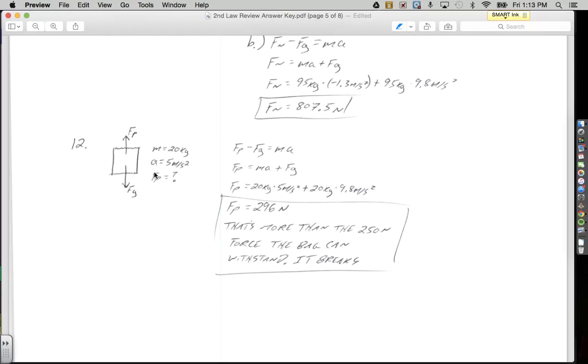And the reason for that is because we're actually saying, how hard do we have to pull to make it move 5 meters per second squared? If we pull with 250 newtons, it's not going to make it go 5 meters per second squared. It's either going to be more or it's going to be less. The point of the 250 newtons is to say, if I pull more than that, the bag is going to break and I'm going to have groceries all over the place. If I pull less than that, then it's okay. And the bag is going to be fine.